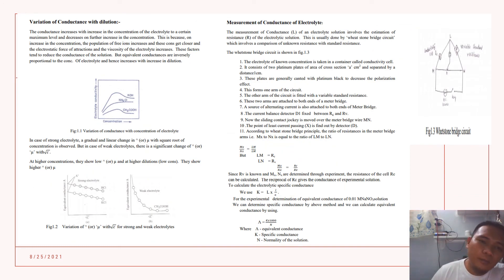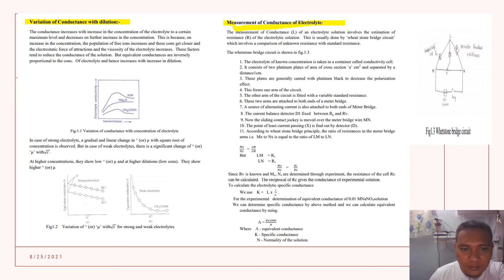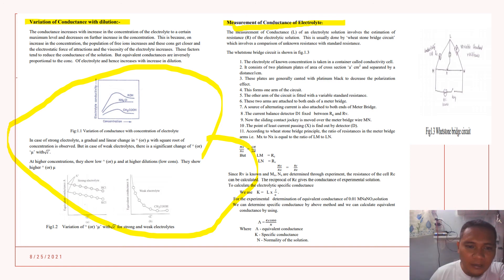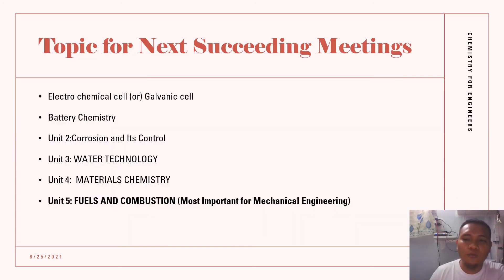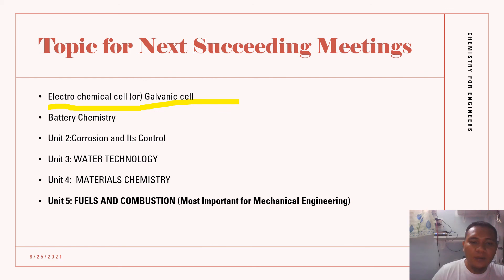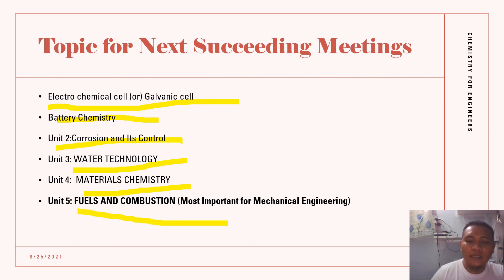For further reading, we have variation of conductance with dilution, and sample measurement of conductance for electrolytes — study this and I will ask for an oral recitation. The topics for our next succeeding meetings are: electrochemical cell or galvanic cell battery chemistry, Unit 2 is corrosion and its control, then water technology, materials chemistry, and fuel and combustion — which is most important for mechanical engineering. Thank you, guys.